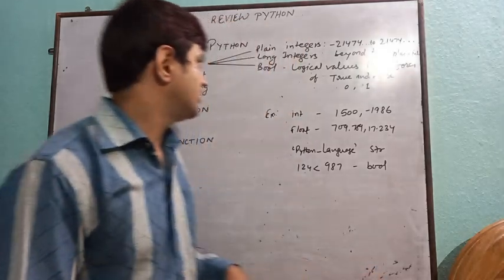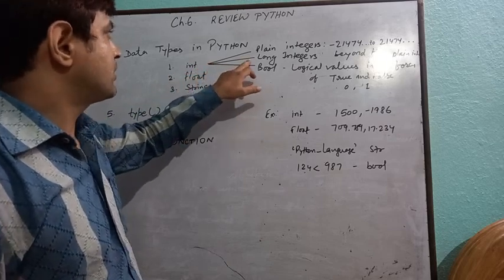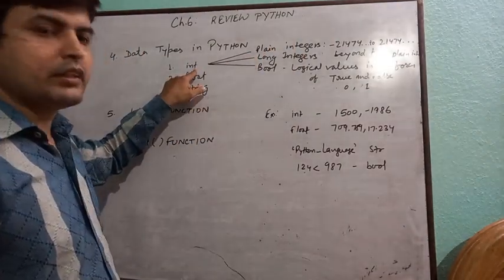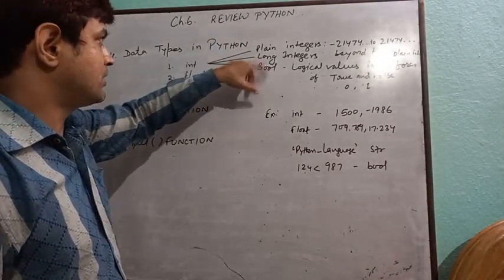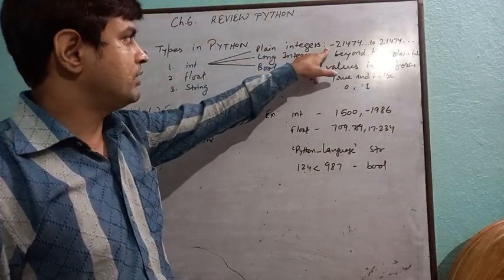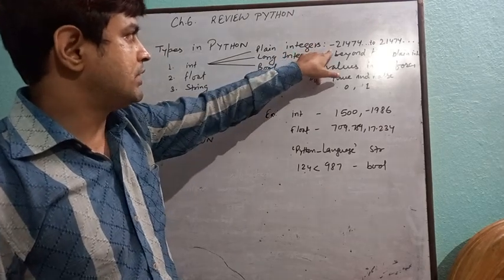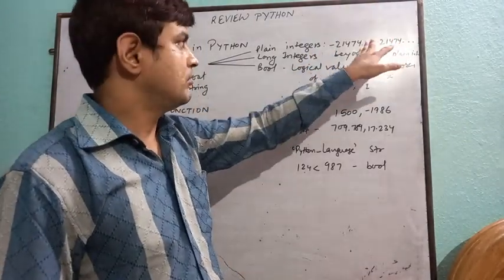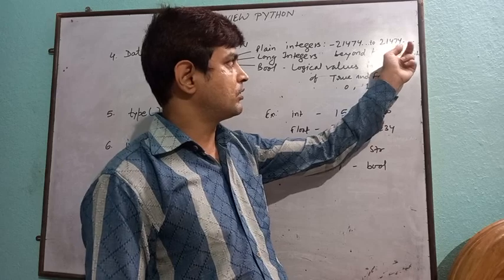In Python, there are three types of data: int, float, and string. Int stands for integers, and remember that 'int' is a keyword. Int has been categorized into three: plain integers, long integers, and bool. Plain integers range from approximately minus 2,147,483,648 to positive 2,147,483,647 — please refer to the book for the exact range. If integers are beyond this range, they fall under long integers. As the size of number increases, more memory storage is required.